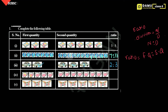Next one. Here, how many cups? 1, 2, 3, 4, 5. So 5 is to 1, 2, 3, 4, 5, 6, 7, 8 — so 8 cups in the second quantity. Next one: how many butterflies? 1, 2, 3 — write 3 here. Then 1, 2, 3, 4, 5 — so 5 butterflies. This is the ratio.